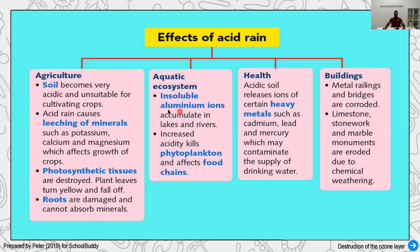In the case of animals living inside water, aluminium ions coming from lakes and rivers can be lethal. All the phytoplankton inside the aquatic ecosystem are going to die. Since certain animals eat phytoplankton, this totally affects the food chains.